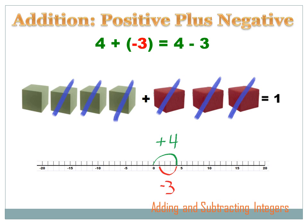A third way to look at this is with cubes. We've got four green positive cubes and three red negative cubes — that's four minus three. Each of those negative cubes takes away one of the positive cubes. So we take away three positive cubes, and we've got one positive cube left. The answer is one.